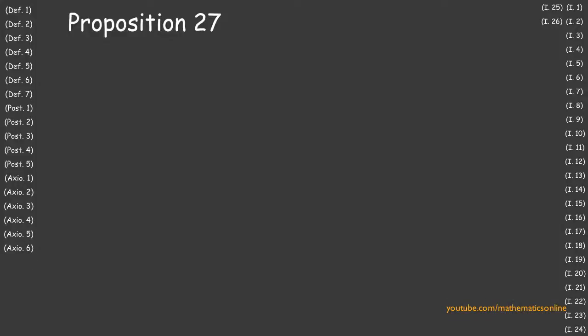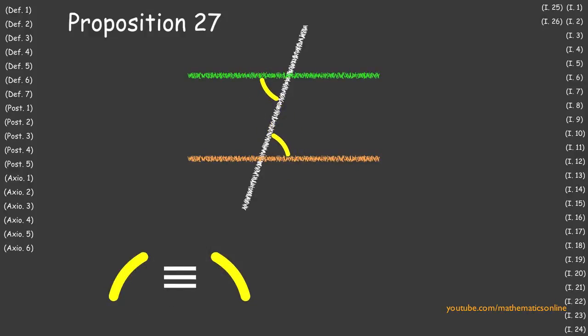In Proposition 27, we prove that if two straight lines are intersected by a third line, making the alternate interior angles congruent to each other, then the two straight lines must be parallel.